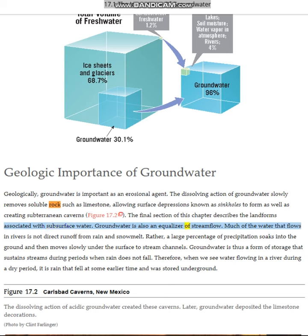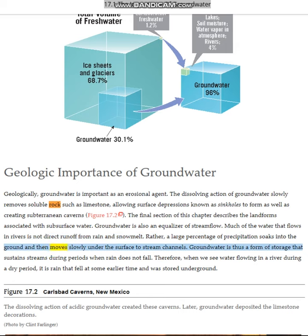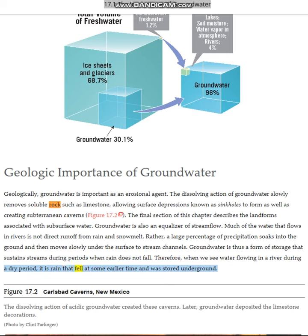Groundwater is also an equalizer of stream flow. Much of the water that flows in rivers is not direct runoff from rain and snowmelt. Rather, a large percentage of precipitation soaks into the ground and then moves slowly under the surface to stream channels. Groundwater is thus a form of storage that sustains streams during periods when rain does not fall. When we see water flowing in a river during a dry period, it is rain that fell at some earlier time and was stored underground.